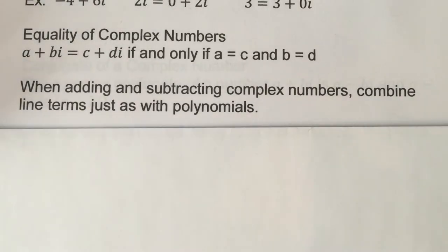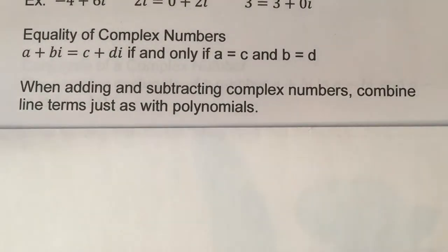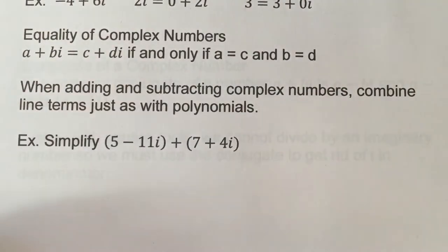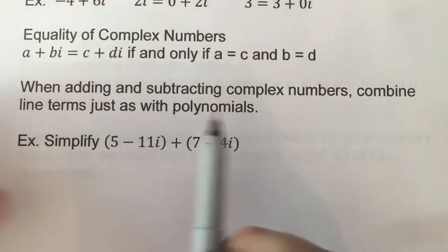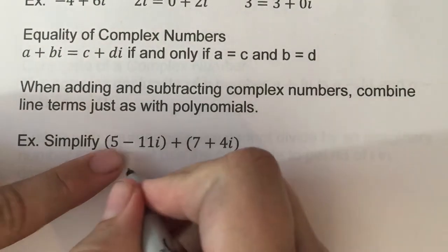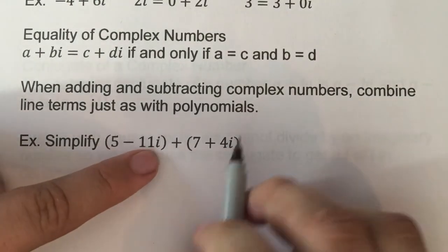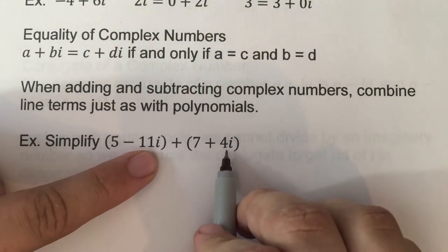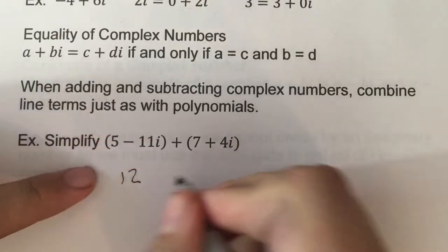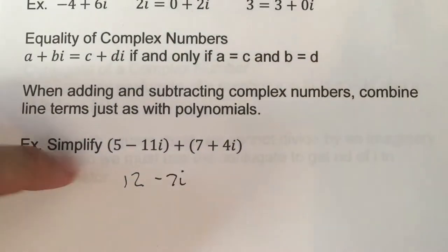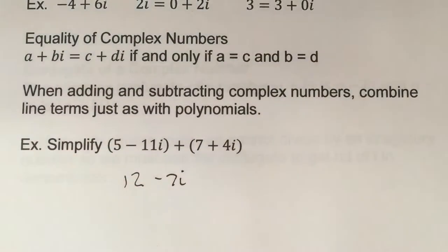When adding or subtracting complex numbers, we combine like terms just like we would with polynomials — reals with reals, imaginaries with imaginaries. So here we put the real parts together and the imaginary parts together: 5 and 7 add to give 12, and negative 11i plus 4i gives minus 7i.